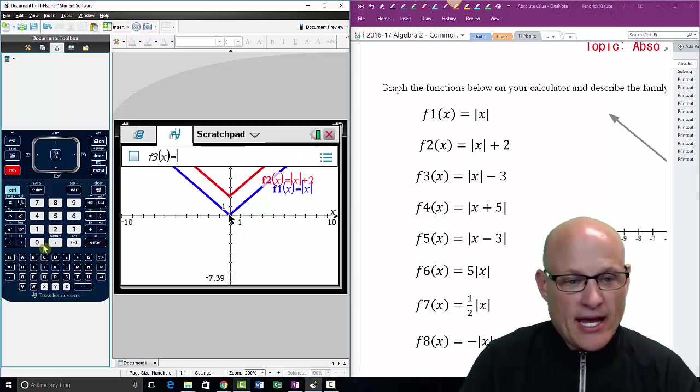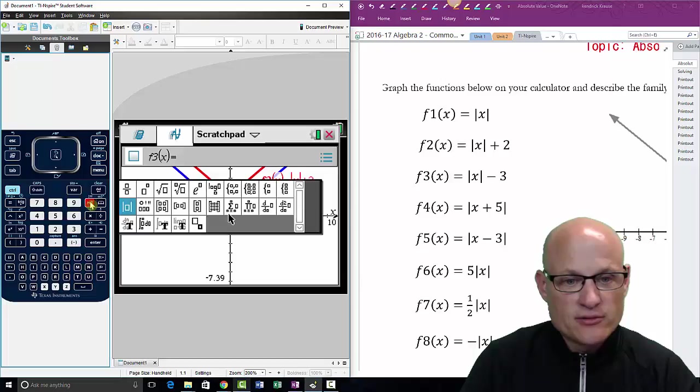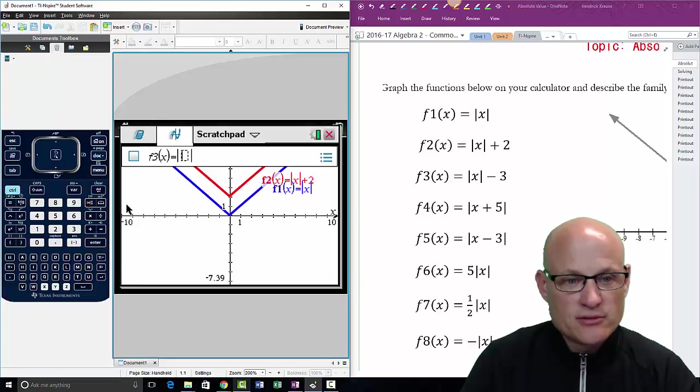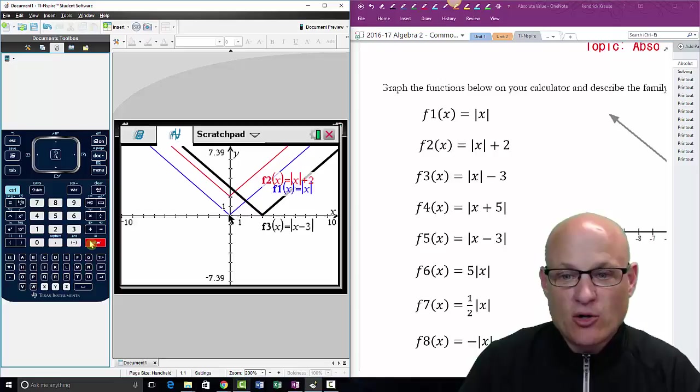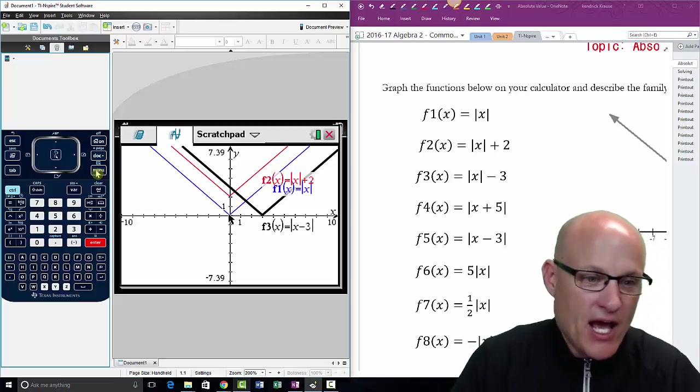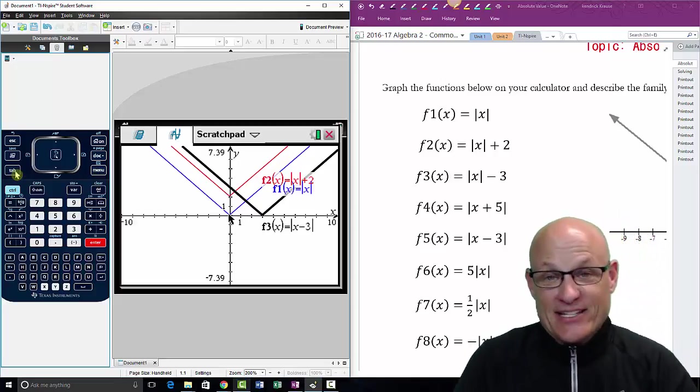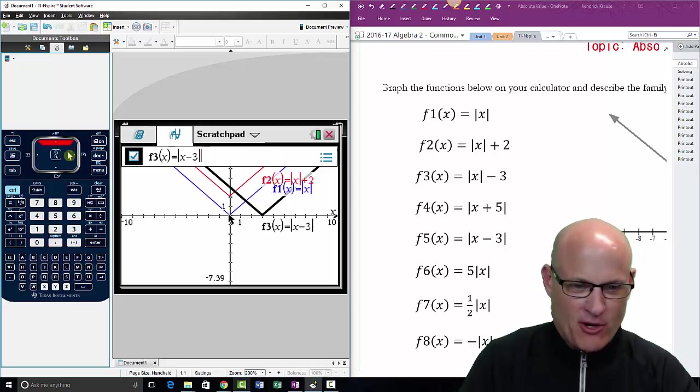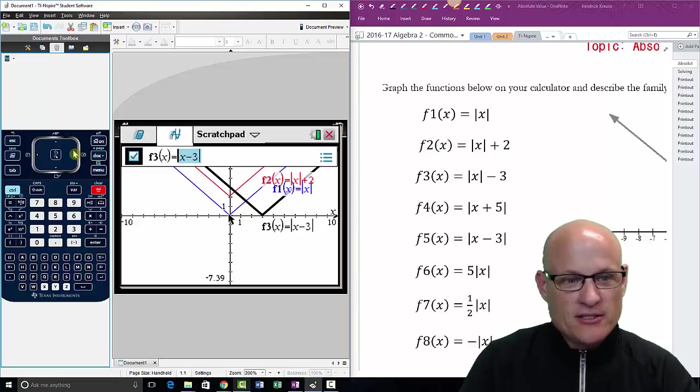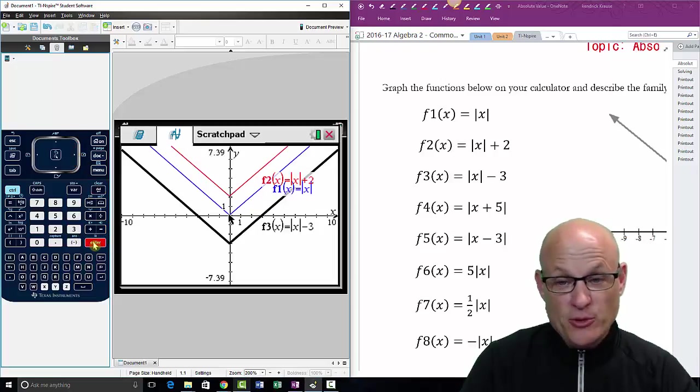We go absolute value of X. Now this should come as no surprise, minus 3, just moves it down three units. Oh God, I put it in the middle again. Again, to get to your functions and you want to fix them, because that's what we're doing today, we're showing you how to fix problems you type in wrong. I typed it in wrong. I just go over, I hit the tab button, I hit the up arrow, and then I do minus 3 and then it goes down 3. Oh man.